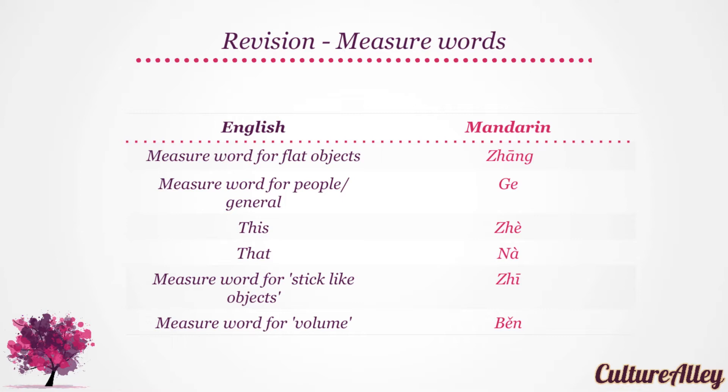The measure word for flat objects is 张, while that for people or for general use is 个. This will be 这, and that becomes 那. The measure word for stick-like objects is 只, whereas the measure word for volumes is 本.